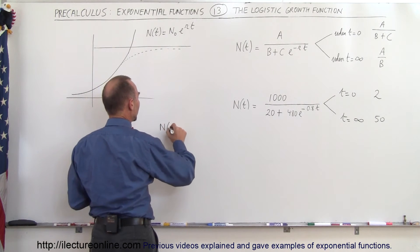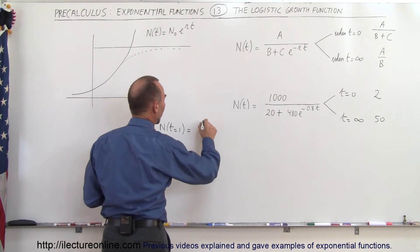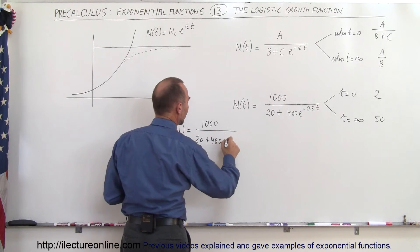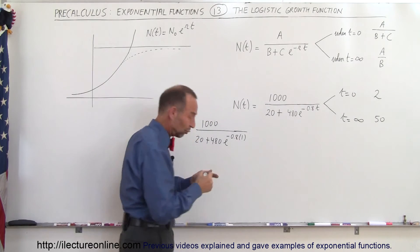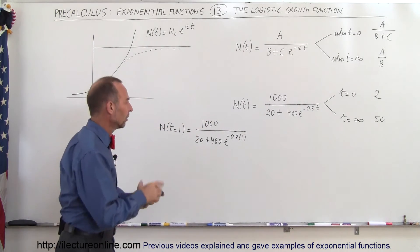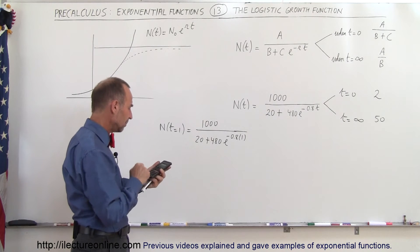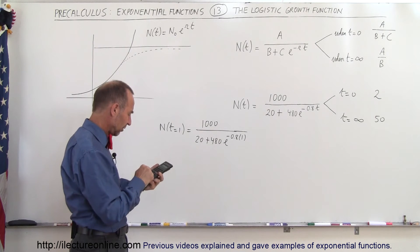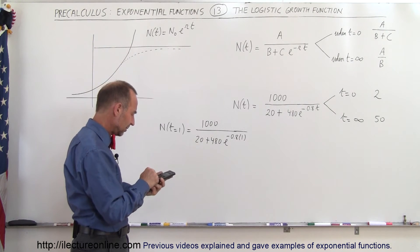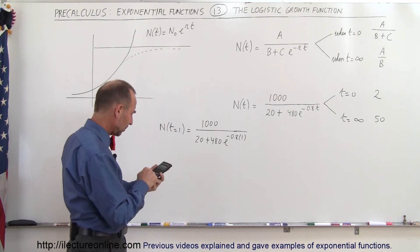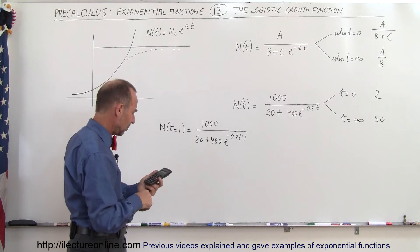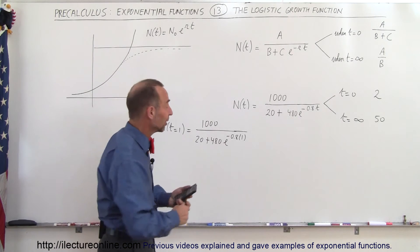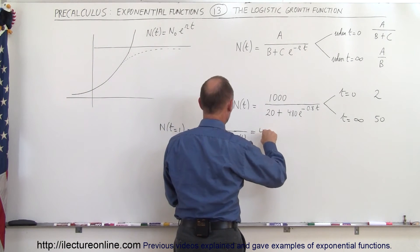So the population N when t is equal to 1 would be equal to 1000 divided by 20 plus 480 times e to the minus 0.8 times 1. And of course for this you would want to use a calculator. So 1 times negative 0.8 is negative 0.8, take e to the x of that times 480 plus 20, use that as a denominator. That would be 1 over x. And then multiply times 1000 and we get 4.24. My eyesight isn't that good anymore to see these numbers. So this is equal to 4.24.